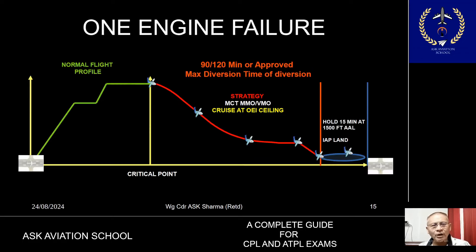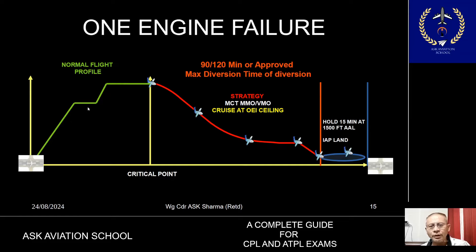Apart from one engine failure, there are three critical emergencies considered for planning purposes. The first is one engine failure: the aircraft, having departed from a particular airport, climbs to the normal cruising altitude under all normal conditions, and it is assumed that at the critical point the aircraft suffers one engine failure.